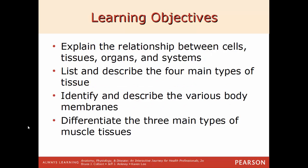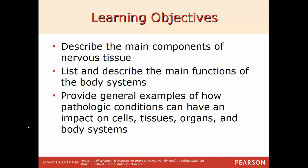The learning objectives for this chapter: be able to explain the relationship between cells, tissues, organs, and systems; list and describe the four main types of tissue; identify and describe the various body membranes; differentiate the three types of muscle tissue; describe the main components of nervous tissue; list and describe the main functions of the body's systems; and provide general examples of how pathologic conditions can impact cells, tissues, organs, and body systems.